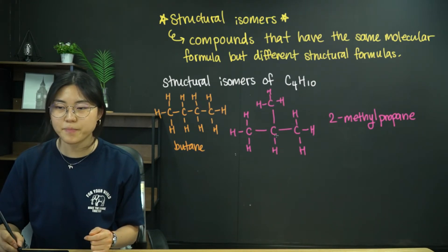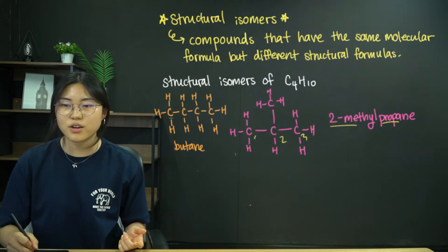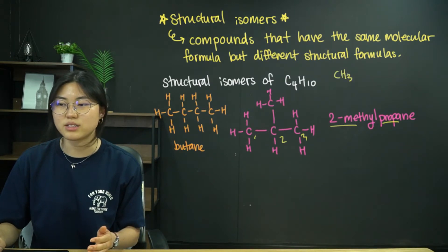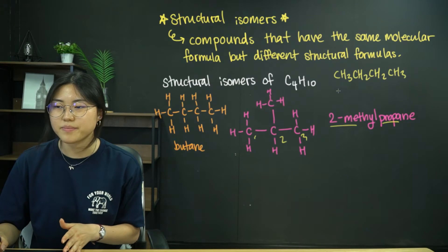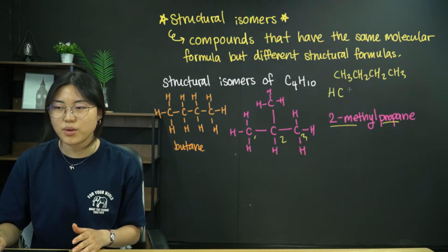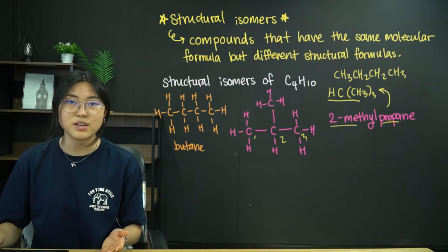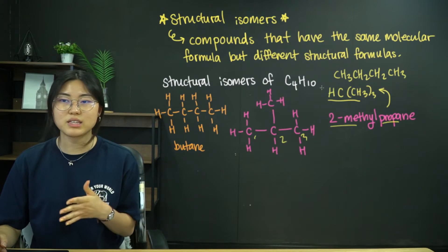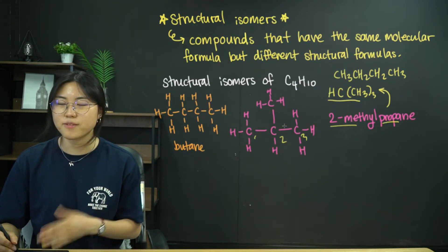We also have this structure where there is a branch — the central carbon is bonded to three carbons. Count again: 1, 2, 3, 4 carbons and 10 hydrogens. The molecular formula is the same, but the structural formulas are different. This is 2-methylpropane because the longest chain is 1, 2, 3 — propane — and we have a methyl group on the second carbon. So these are structural isomers of each other: same molecular formula, different structural formula.